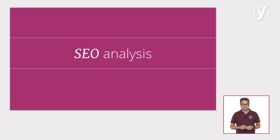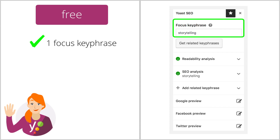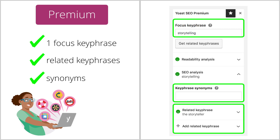Let's start with our SEO analysis. In our free plugin, the SEO analysis helps you optimize each post for one keyphrase. But what if you want a post to rank for slightly different, but related keyphrases as well? If you upgrade to Yoast SEO Premium, you can add multiple relevant keyphrases and get SEO feedback for each one. Optimizing for related keyphrases and synonyms creates more and better ranking opportunities, and also makes your text much more pleasant to read.